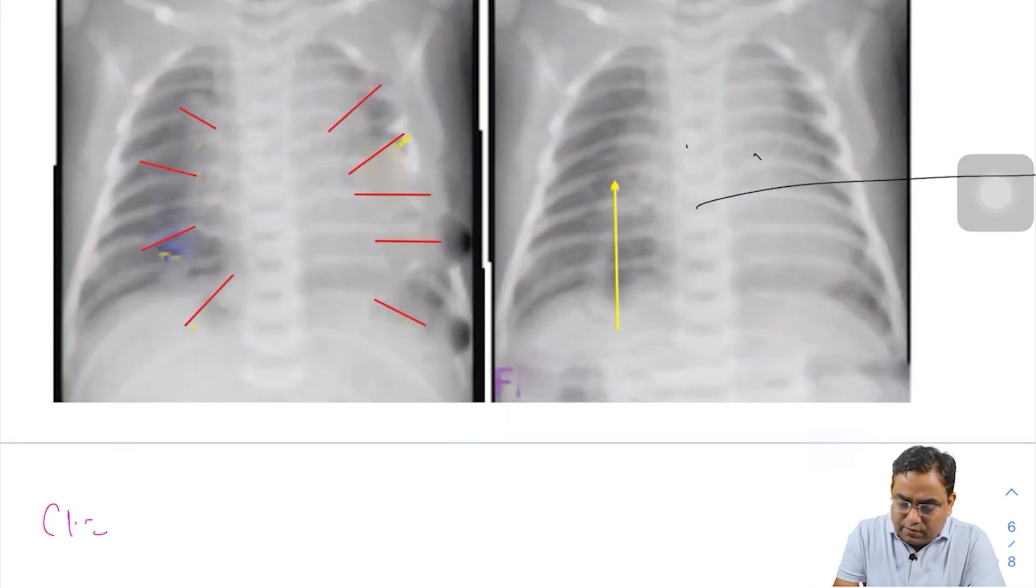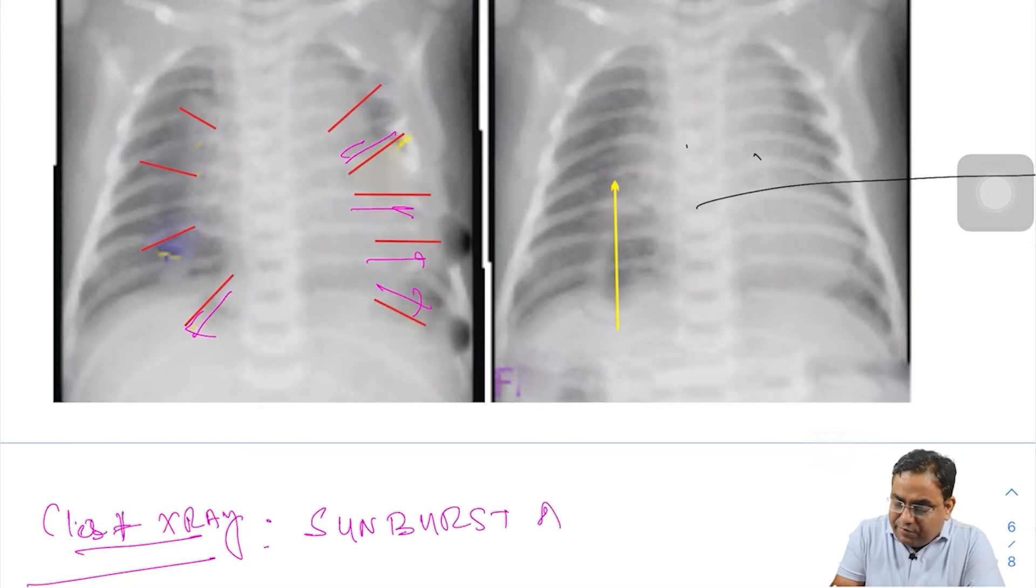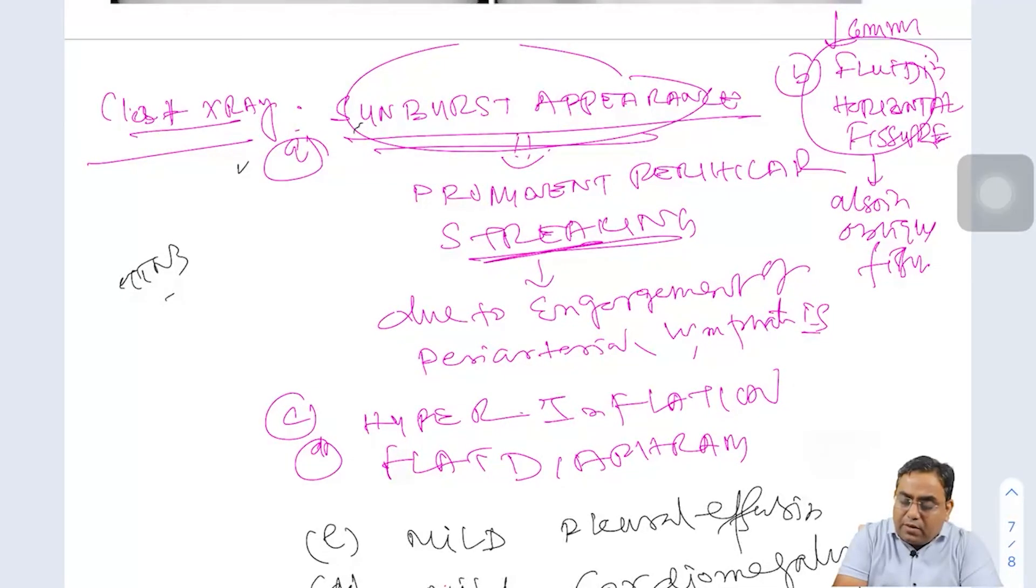The chest X-ray finding is very important. This is the sunburst appearance - sunburst appearance, fluid in the horizontal fissure, hyperinflation, flat diaphragm, mild pleural effusion, and cardiomegaly.